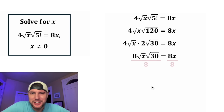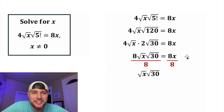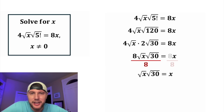Then we can divide both sides by the 8. On the left-hand side, these 8s will cancel each other out, so we're left with the square root of x times the square root of 30. And on the right-hand side, these 8s cancel each other out, so we're left with x.